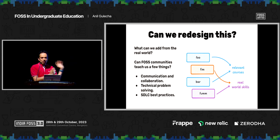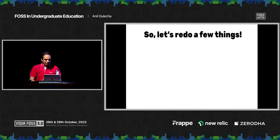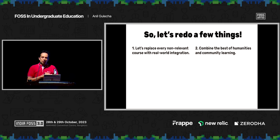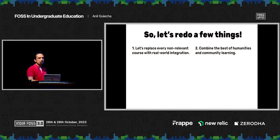If you could somehow magically do all of this within that undergraduate program construct, we can have a timeline that looks something like this. Replace every non-relevant course with real-world stuff. Combine the best of humanities — that is where your other skills come in: critical thinking, problem solving, communication, collaboration. These are things very much taught in the humanities and liberal arts courses, but not typically focused on in a computer science program. And these are more equal, if not more important, to working day-to-day out there.